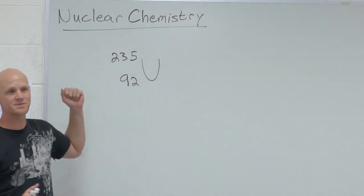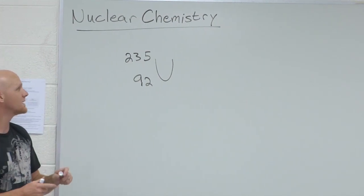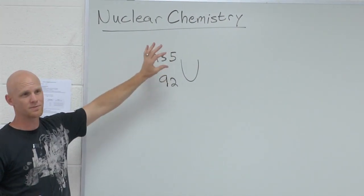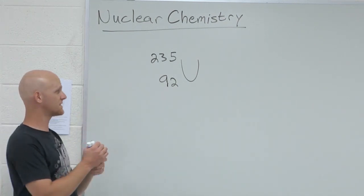All right, so nuclear chemistry. A little review on what you guys took home from Gen Chem 1. You just got to know what the isotope symbols mean. So what is this lower number called? Atomic number. What does it give you?